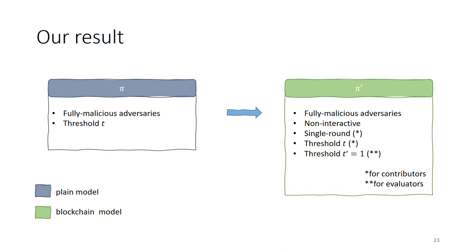Hopefully, this gave you some idea of what challenges we encountered and what approaches we took to solve these. As a recap, in our main result, we provided a construction which, given a protocol Pi in the fully malicious model, transforms it into another protocol Pi' in the blockchain model, which does not require interaction between the MPC participants and requires only a single round of interaction from the contributors.